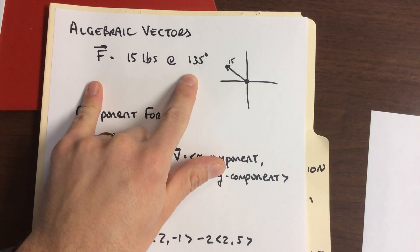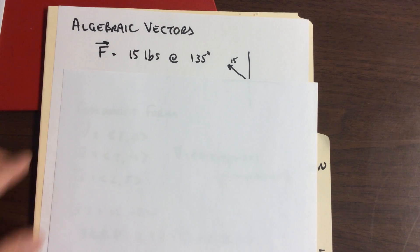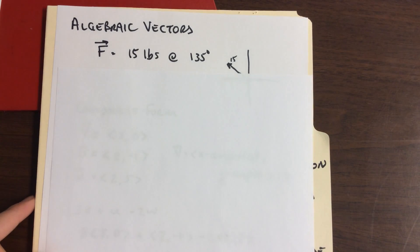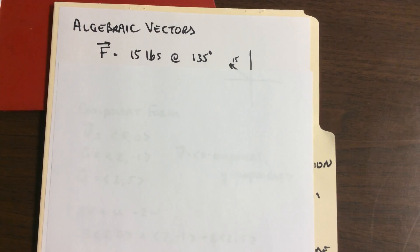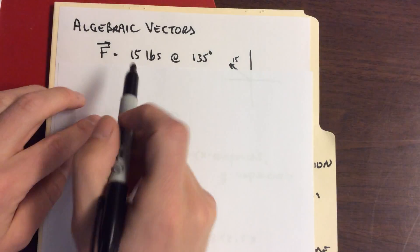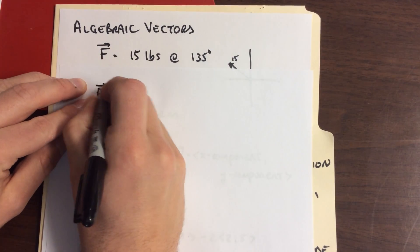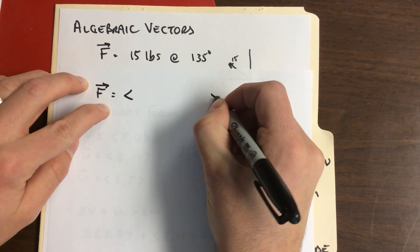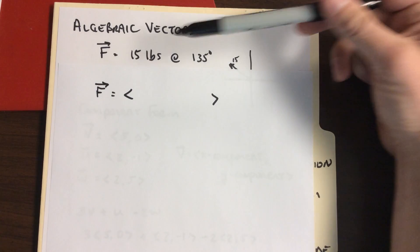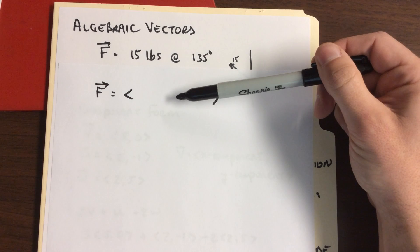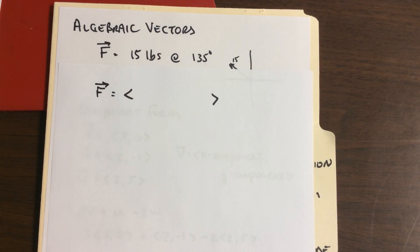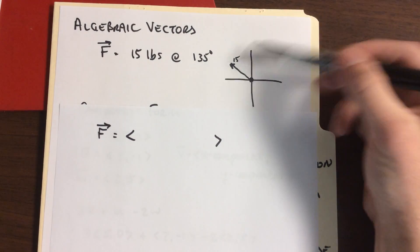We've got this 15 pounds at 135 degrees. That is in standard notation where we just identify the magnitude and the angle. Can I take that and rewrite it in component form? So how do we switch from the standard form where we just identify separately the magnitude and the angle? We go back to that.